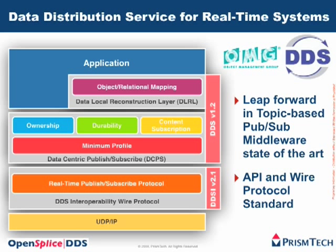DDS is made of two macro layers: one called Data Centric Publish Subscribe, and the other called the Data Local Reconstruction layer. The bottom layer, the DCPS, provides you with basic PubSub over a distributed relational information model, while the Data Local Reconstruction layer, the DLRL, allows you to do object-relational mappings, as we saw toward the beginning of this podcast.